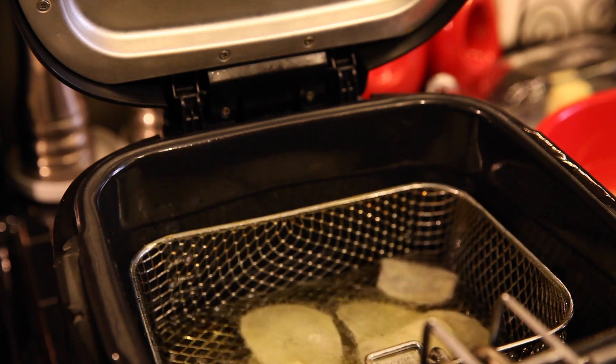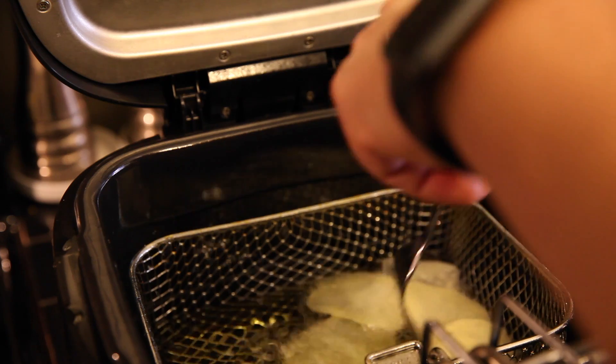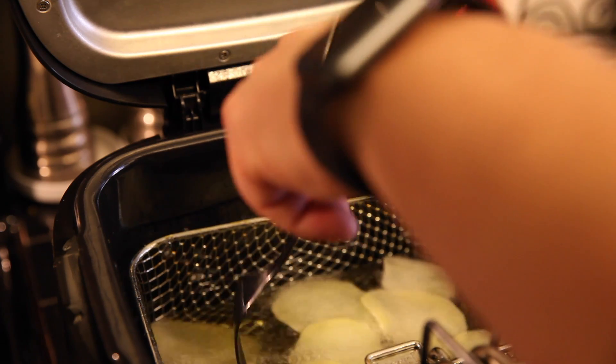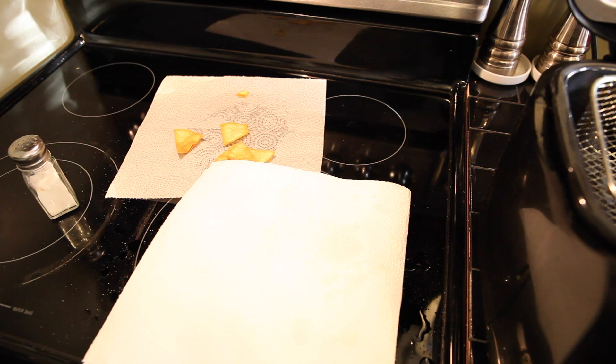Then use a fork or something to agitate them and try to flip them about halfway through. When the chips are nice and golden brown you're going to take them out.